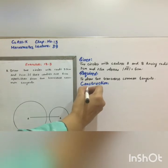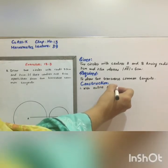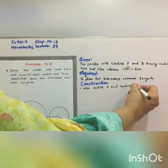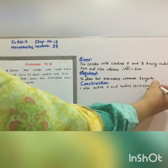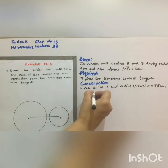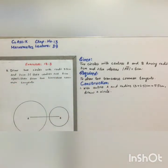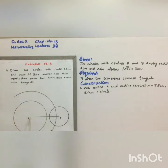With center A and radius 3 plus 2.5 centimeters, that is 5.5 centimeters, draw a circle which is the third circle with center A and radius 5.5 centimeters, which is the sum of the radii of both the circles. Draw the third circle.